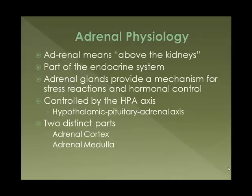First of all, the adrenal glands are named for where they sit. Adrenal means above the kidneys. You have one on each side above your kidneys, about the size of a walnut roughly. They are part of the endocrine system, which is another name for your hormone system. The adrenal glands provide a mechanism for stress reactions and hormonal control. They are controlled by what's called the HPA axis, which stands for the hypothalamic pituitary adrenal axis. The hypothalamus gland is in your brain and kind of oversees most of the endocrine system.